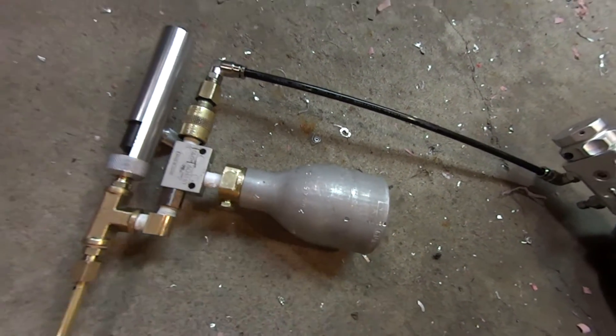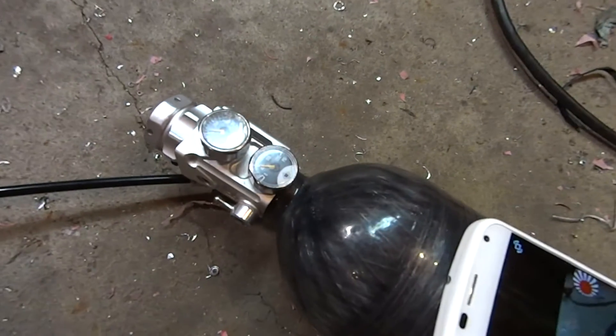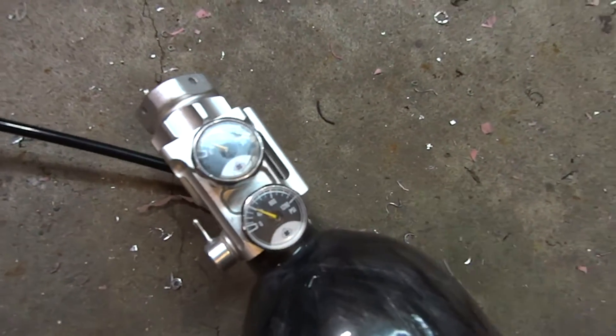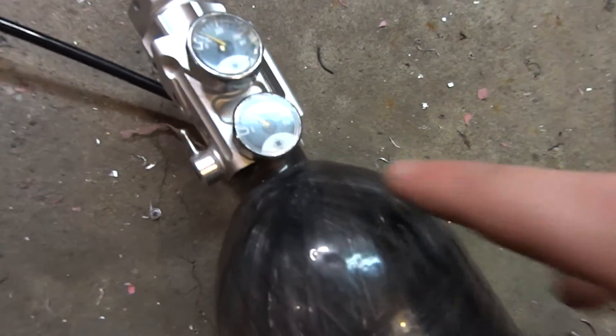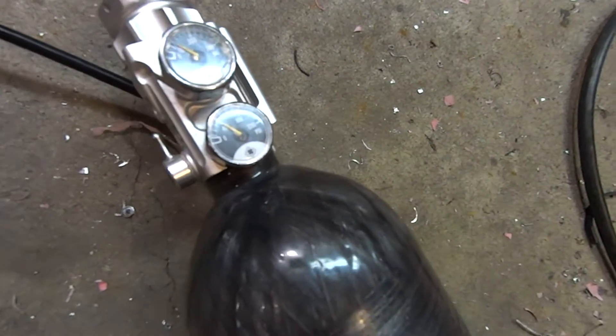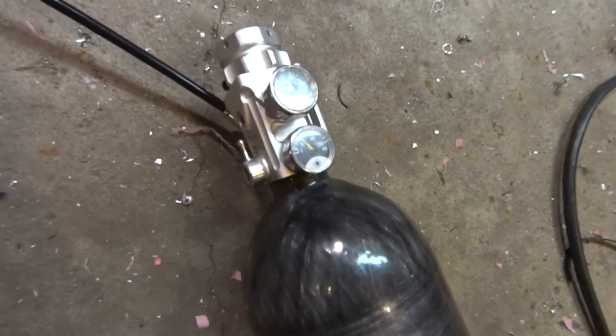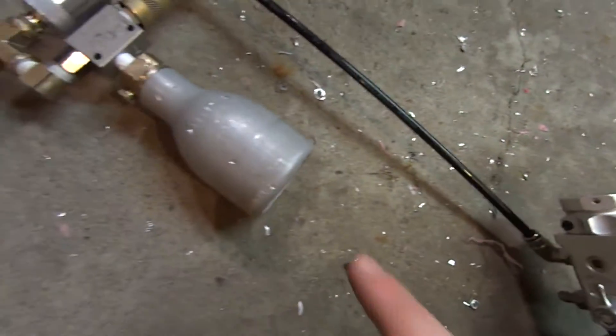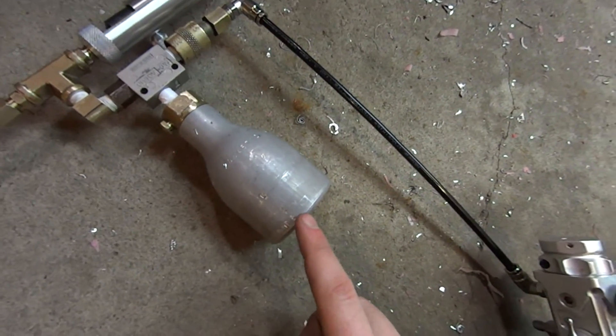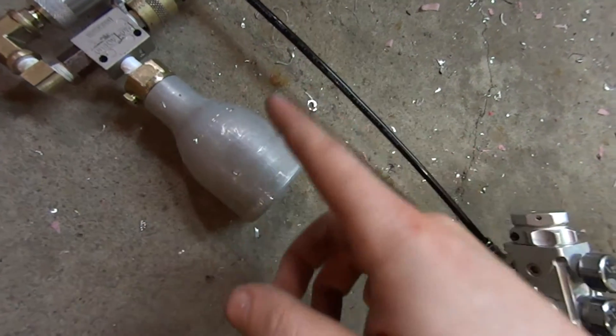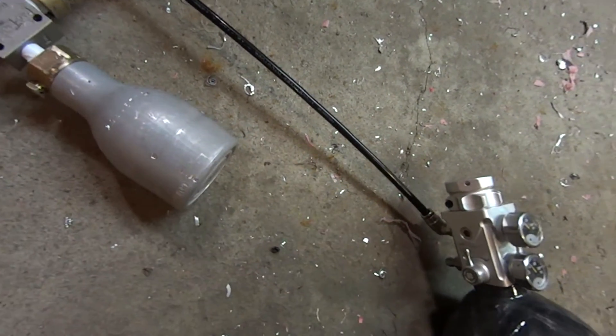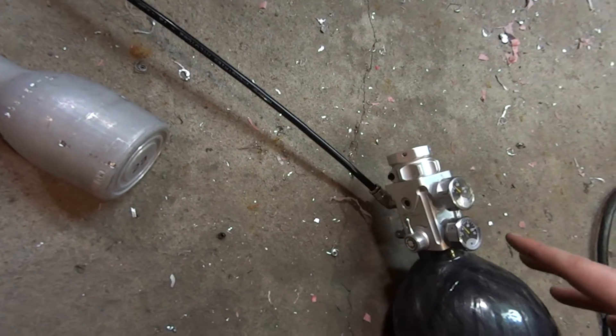I put a female to female coupling into the QEV. I got my bottle slightly filled up here at about 410 psi and it's regulated down to about 110 psi. What that's doing right now is it's filling up this bottle, and when I fire it, it dumps the contents of this bottle through the barrel.